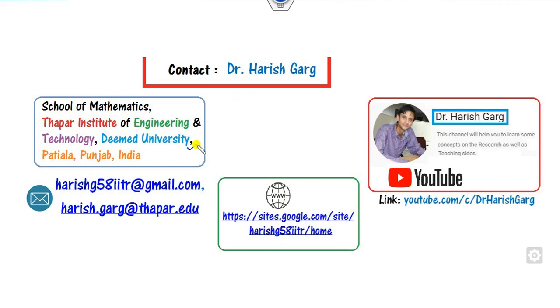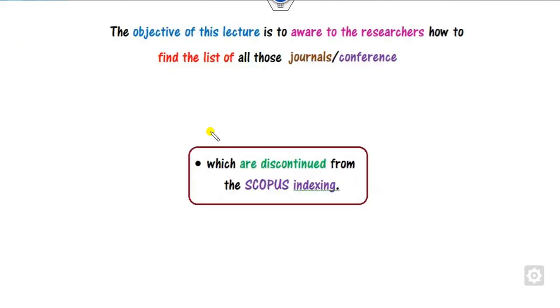I am Dr. Gurd, working in the School of Mathematics, Thapar Institute. The objective of this lecture is to make all researchers aware of how you can find the list of all those journals as well as conferences which are discontinued from Scopus indexing.